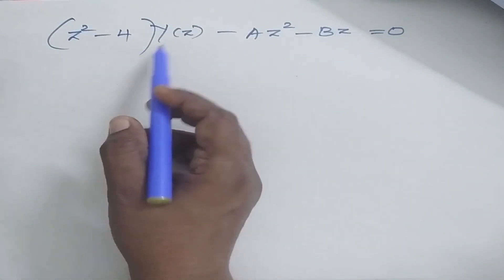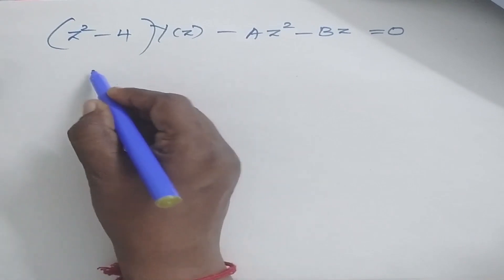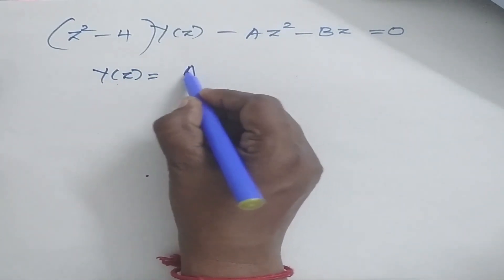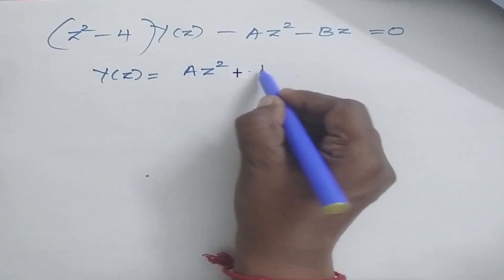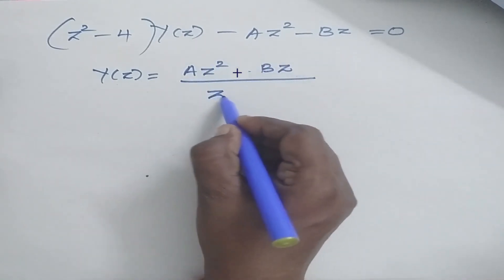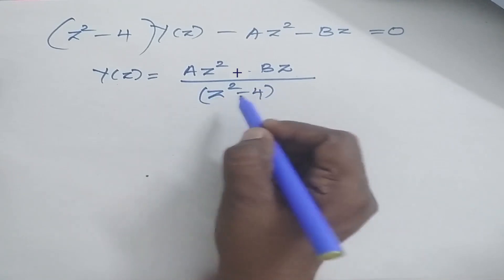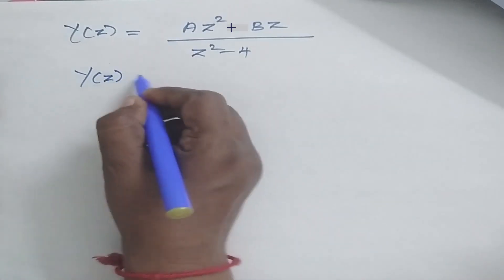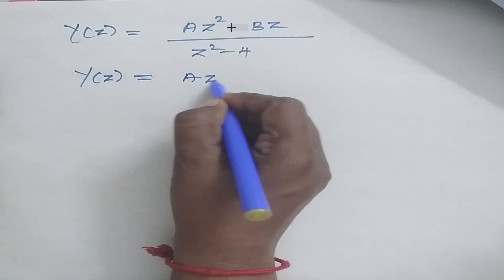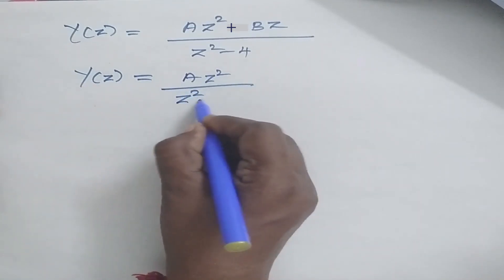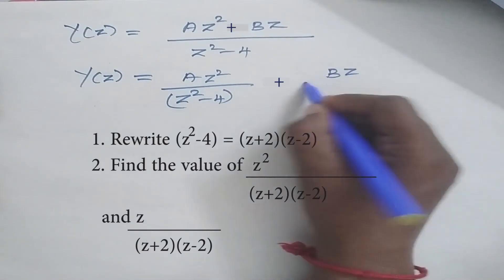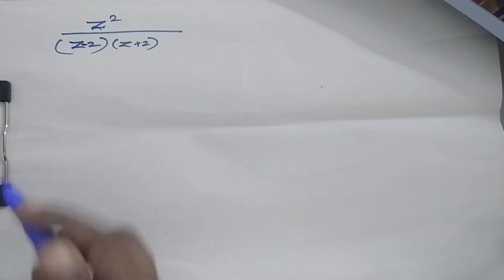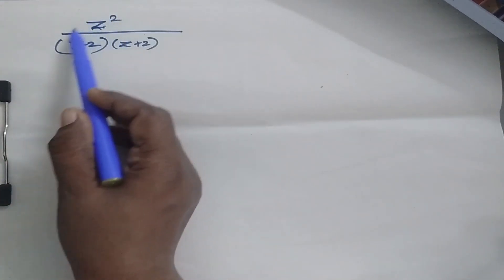So now my Y(z) is equal to — bringing all the terms together — az² minus bz, divided by z² minus 4. So I can rewrite Y(z) as az²/(z² minus 4) plus bz/(z² minus 4). Now we are going to simplify this.